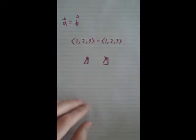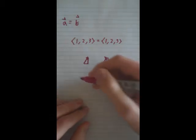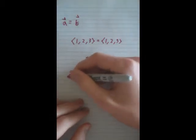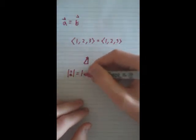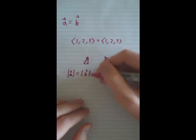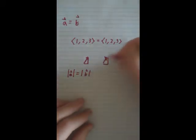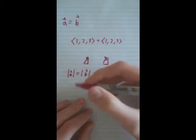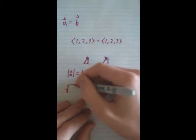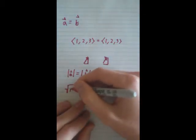The next question is, will they have the same magnitude? Basically, will |A| equal |B|? That's also a yes, because the way we find the magnitude is with Pythagorean Theorem.